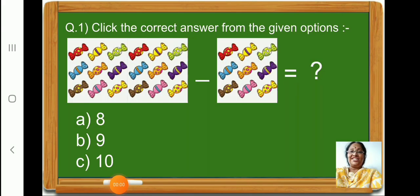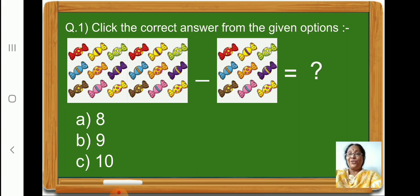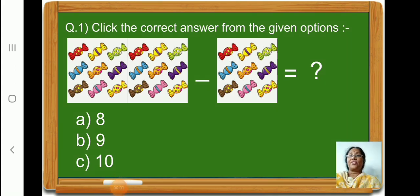Children, you have already given your FA2 Online Examination and SA1 Online Examination. Similarly, for FA4 also, you are going to have an Online Examination. In this examination, you are going to have all Multiple Choice Questions, just like FA2 and SA1. For Number 1, 3 options will be given for a question. You have to click the correct answer from the given options.